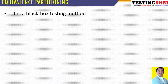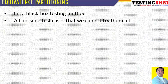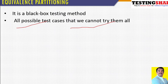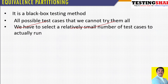Equivalence partitioning testing is a method of black-box testing. We use equivalence partitioning when all possible test cases cannot be executed — it is not possible to try all probable combinations with a given limited number of resources. Because of that, we have to select a relatively small number of test cases to actually run.